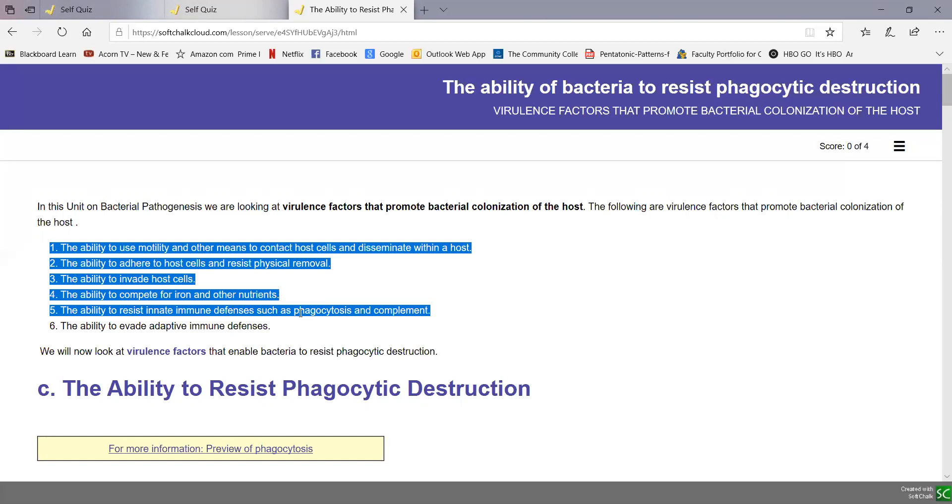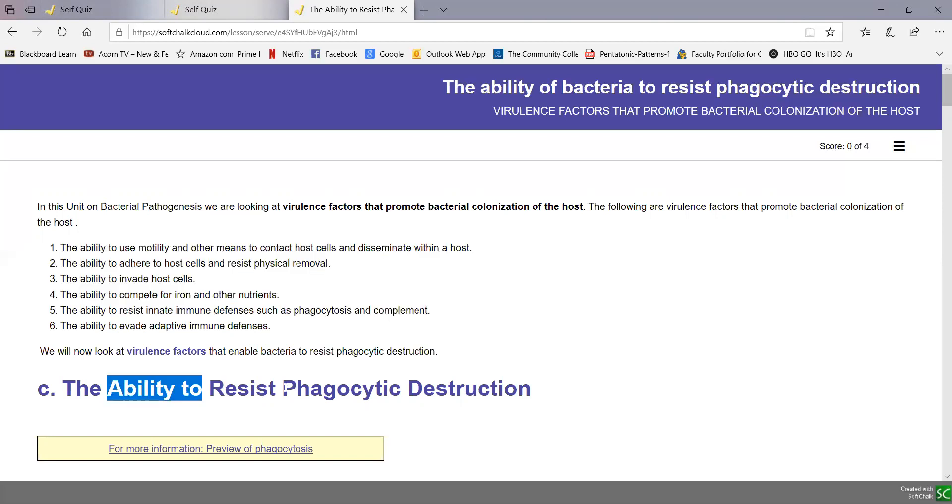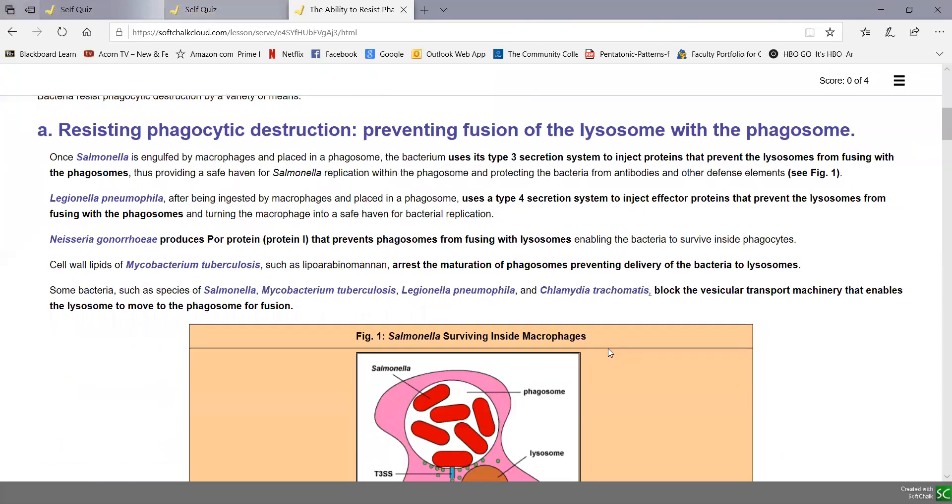We're continuing on with number five. Last time, we looked at how bacteria can resist phagocytic engulfment and how they can resist antibacterial peptides, all part of innate immunity. Continuing on with resisting innate immunity, in this lesson we're going to look at the ability to resist phagocytic destruction.